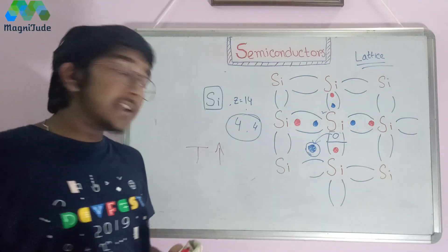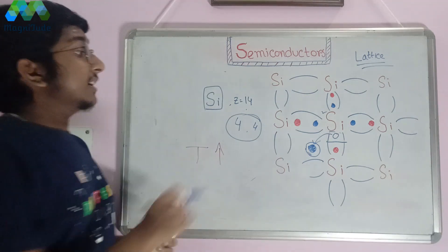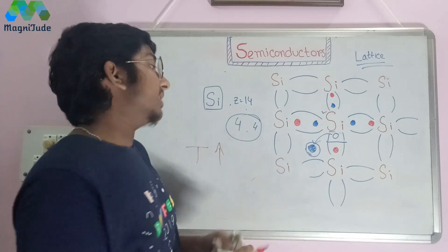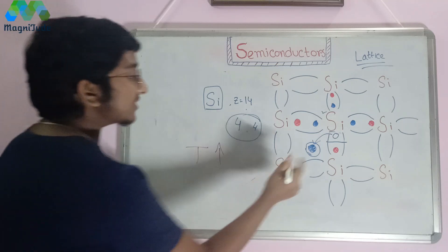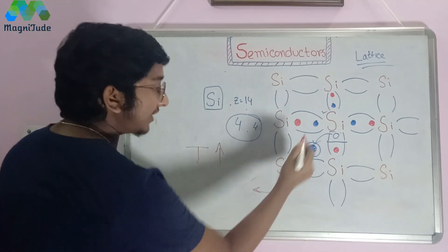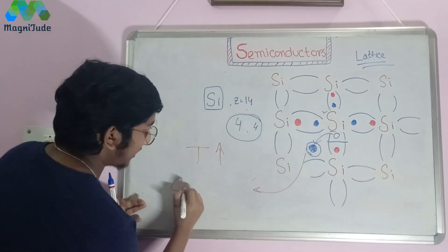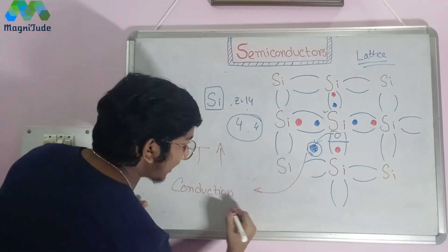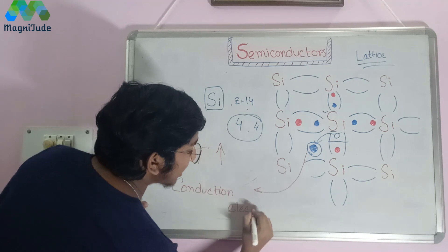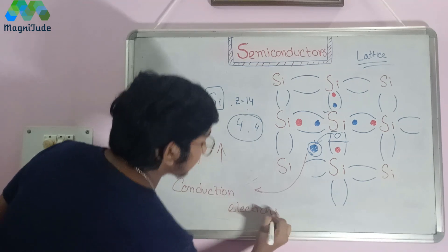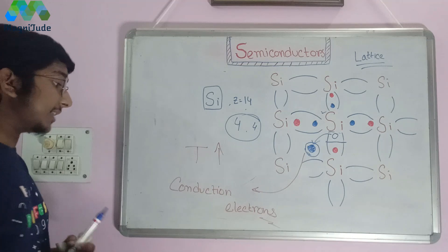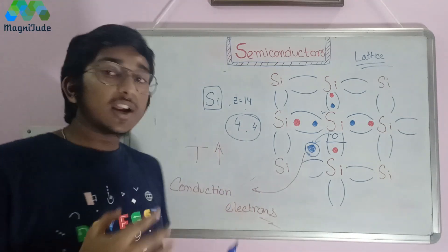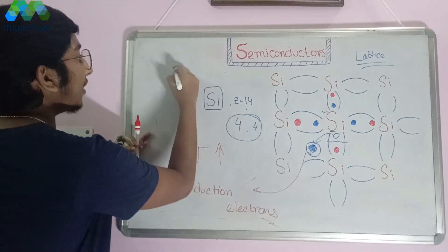One very important point: free electrons naturally help with the conduction of current. So we also call these free electrons conduction electrons. This is a very famous and commonly used name as well.